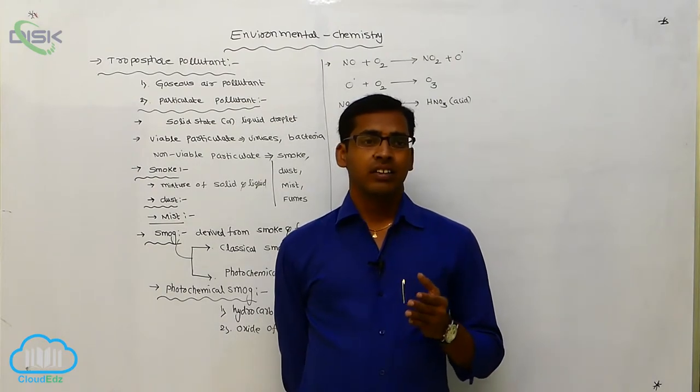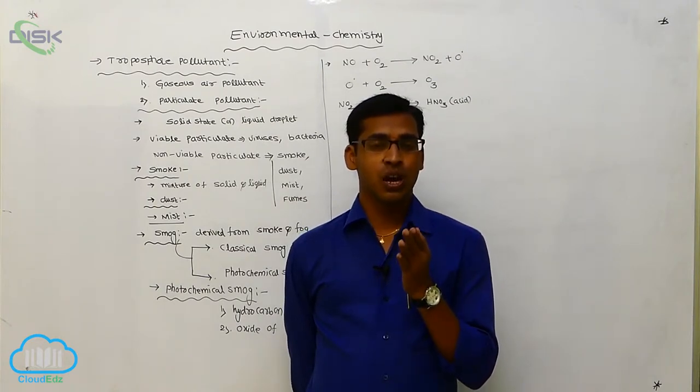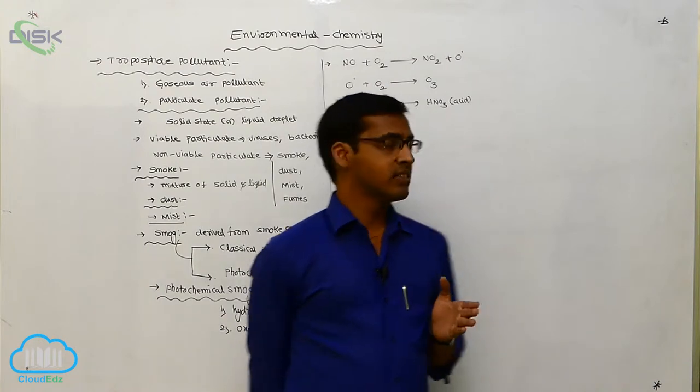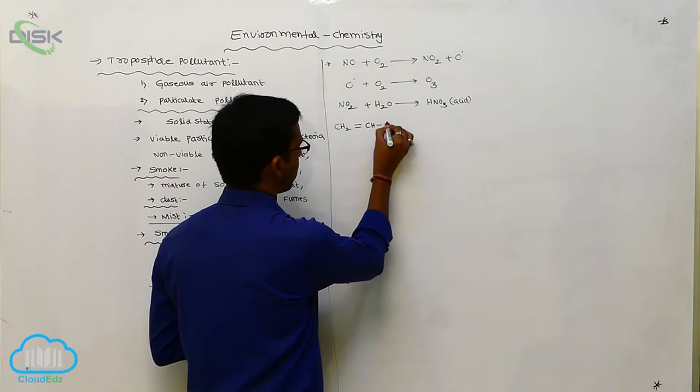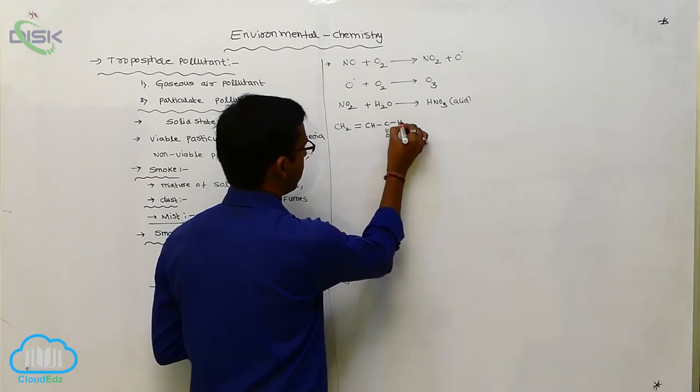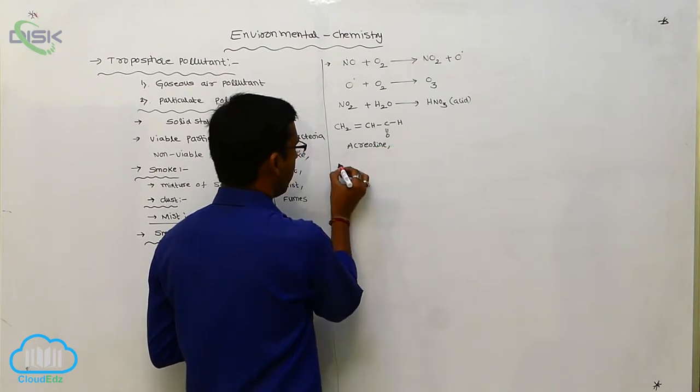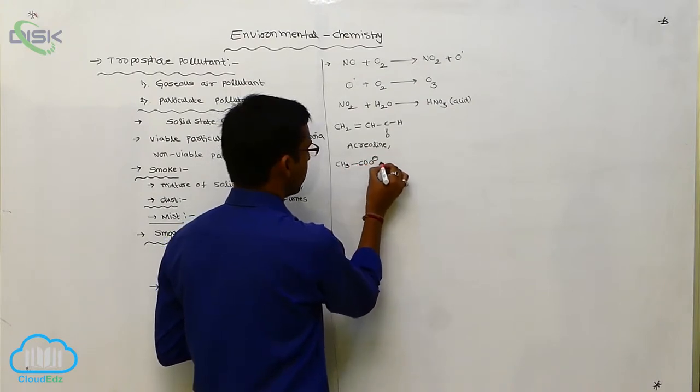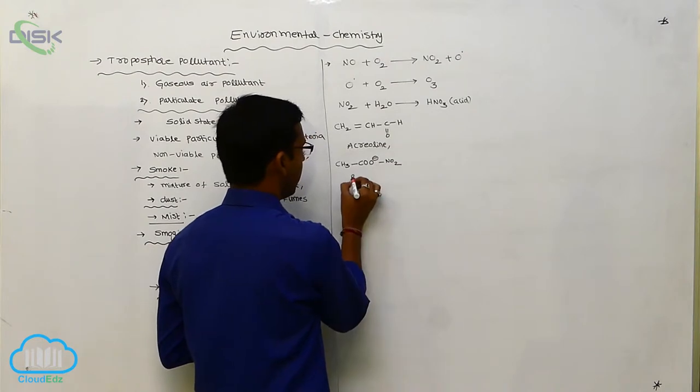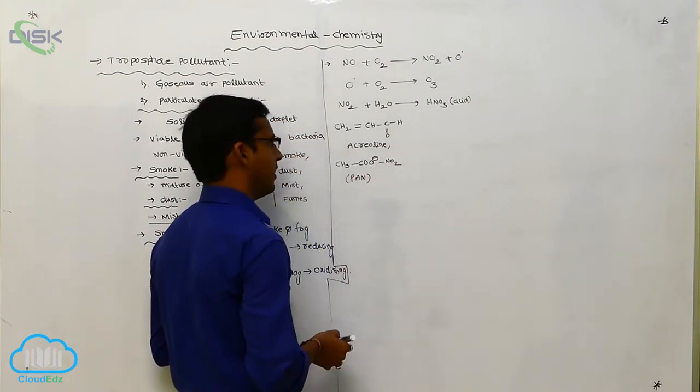Whenever these are considered, the secondary source of photochemical smog is acrolein, CH2 double bond CH, C double bond OH. So acrolein or PAN means peroxyacetyl, CH3COO minus peroxyacetyl nitrate, PAN, peroxyacetyl nitrate.